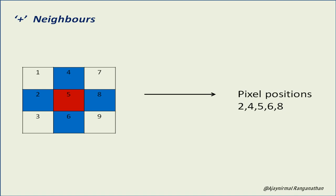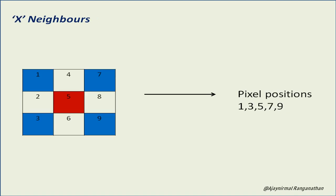In system memory, the positions in the 3x3 window are numbered 1 through 9. The plus neighbor positions selected are 2, 4, 5, 6, and 8. For the x neighbors, the positions are 1, 3, 5, 7, and 9. The original center pixel is always position 5.